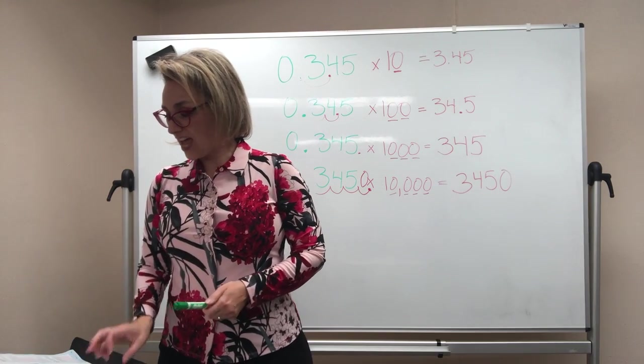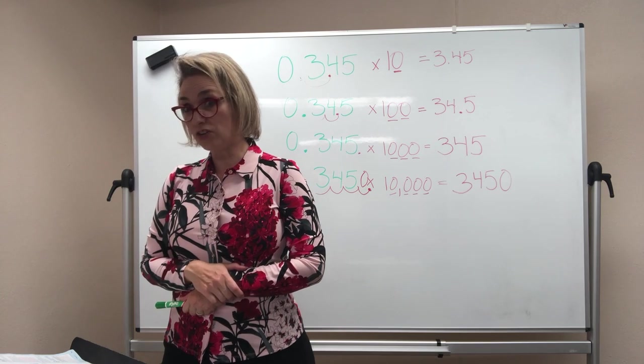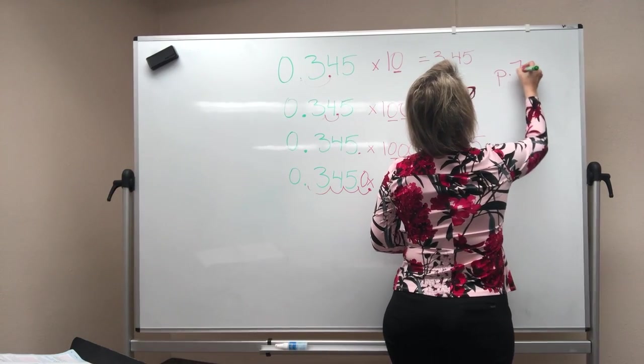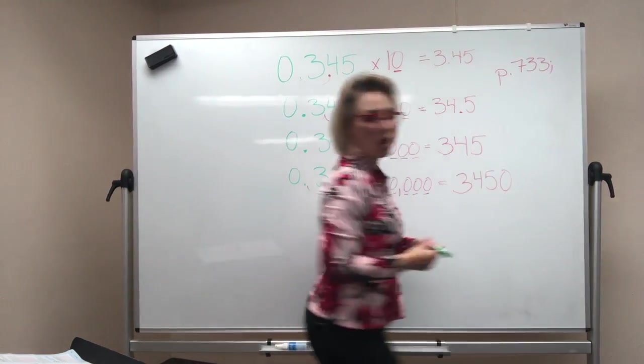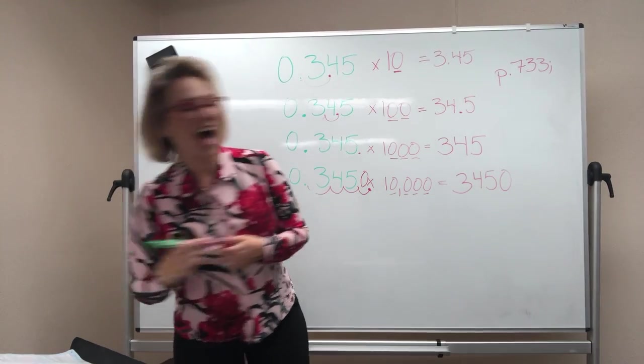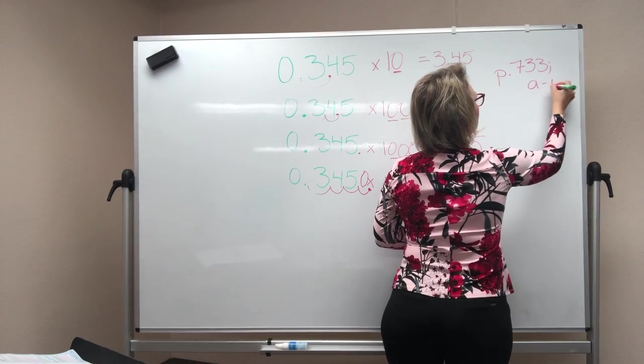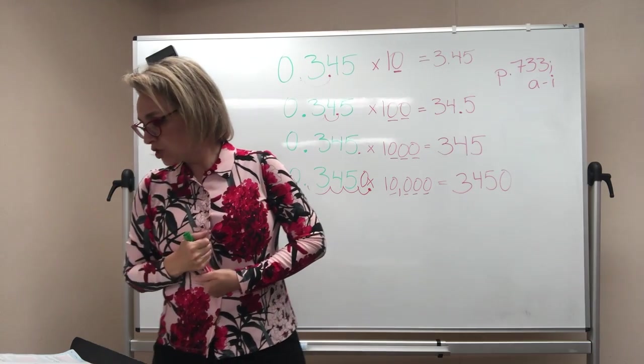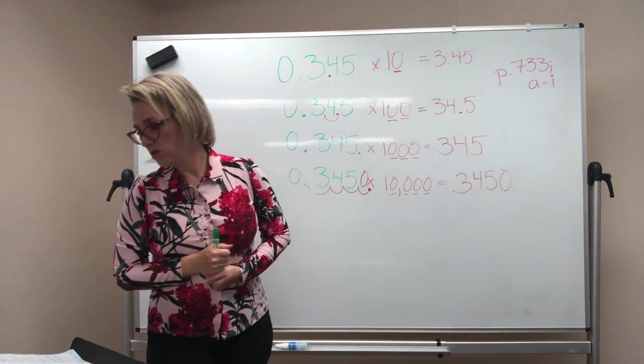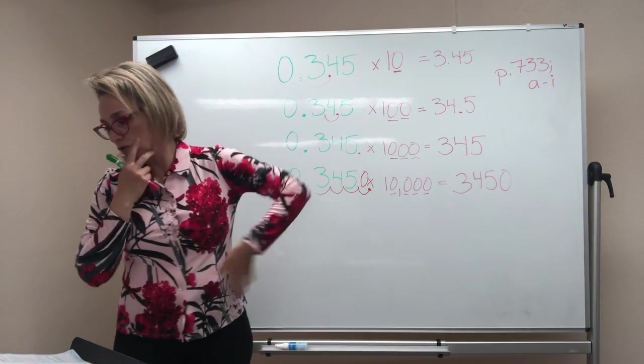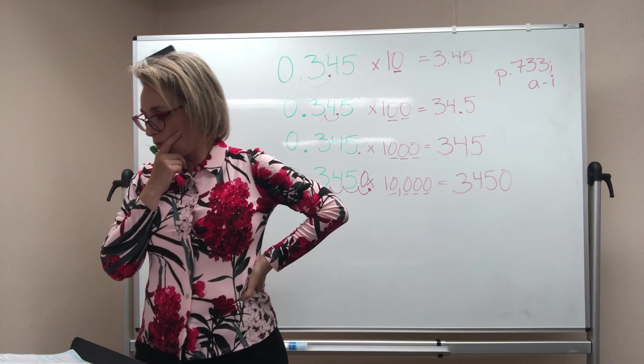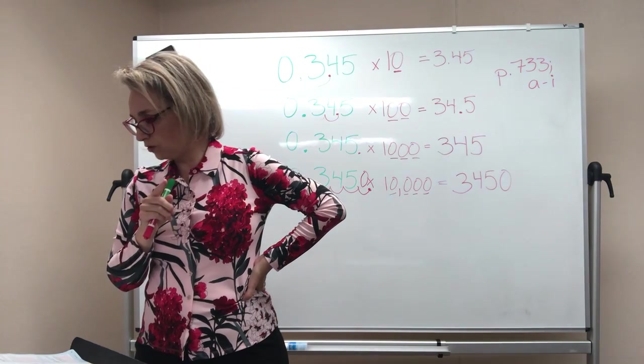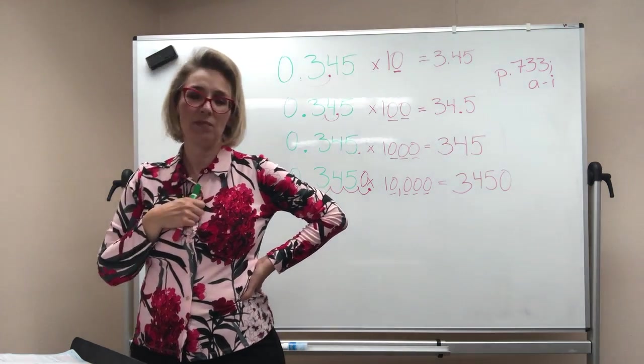Your assignment today is the lesson practice in lesson 111 in the book. So it is page 733. And you are doing A through I. And you're going to see these problems are going to go pretty fast because all you're doing is moving the decimal. Your problems there are all just like what we did here. If you look at those, the first number is 1.234 thousandths. And on A, you multiply it by 10. On B, you multiply it by 1,000. And on C, you multiply it by 100.